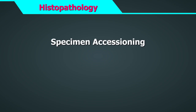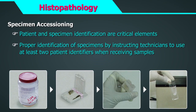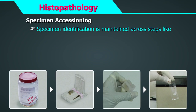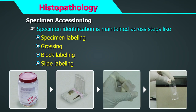One of the biggest challenges laboratories face is the ability to accurately label and track laboratory specimens throughout the lab process in order to avoid potential misidentification errors. Patient and specimen identification are critical elements in surgical pathology. Proper identification of specimens should be done by instructing technicians to use at least two patient identifiers when receiving samples. As there are multiple levels of tissue handling during which errors can enter, specimen identification must be maintained across steps like grossing, block preparation, slide labelling, etc. Laboratories can create their own customized checklists for the same.